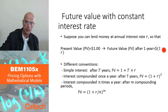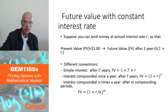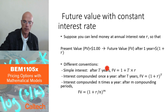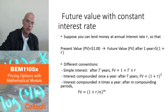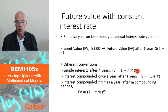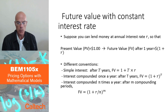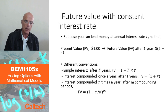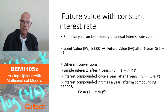By definition of interest rate, after T years you can have different interpretations. For example, so-called simple interest: one dollar becomes 1 + T × r dollars. But that's not usually the way banks quote interest rates.